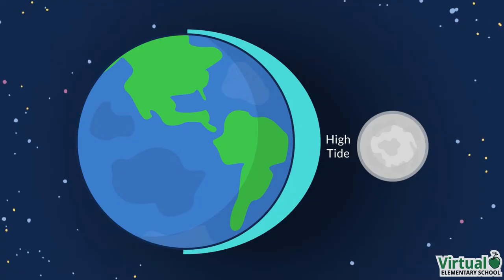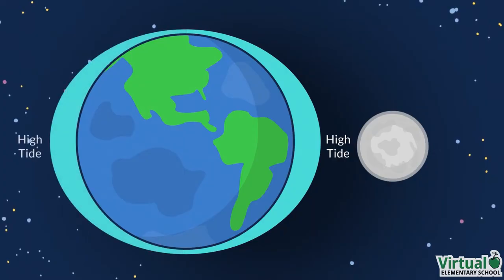However, the Moon is simultaneously pulling Earth towards it, causing a similar high tide on the opposite side of the planet. This subsequently creates low tides in other places on Earth. This means that there are two high tides and two low tides every day.